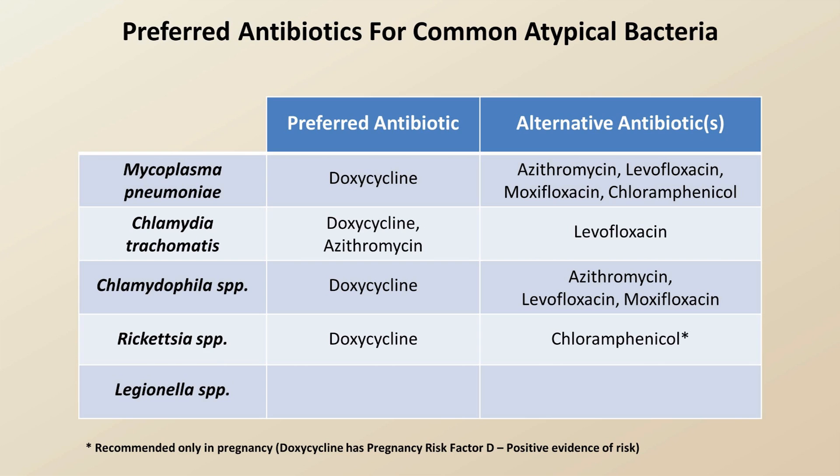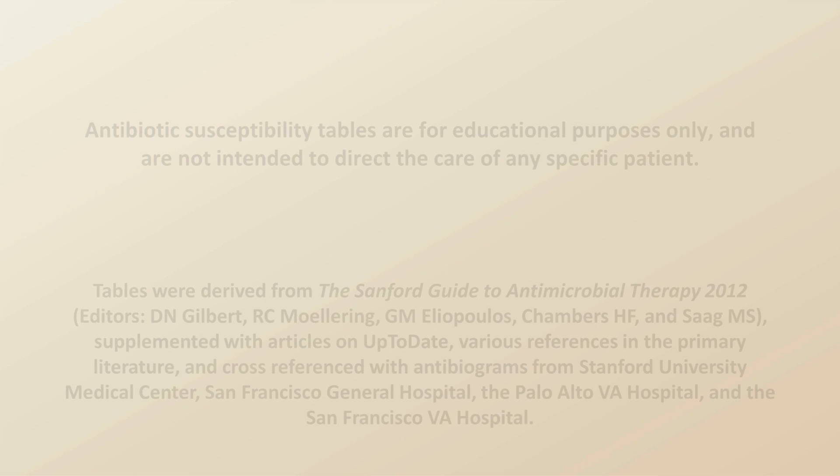Legionella is best treated with one of the two so-called respiratory quinolones, with azithromycin as an alternative. That concludes this relatively brief lecture on antibiotics against atypical bacteria. The next lecture will discuss common side effects and toxicities of antibiotics, including a review of how to monitor drug levels of vancomycin and the aminoglycosides.